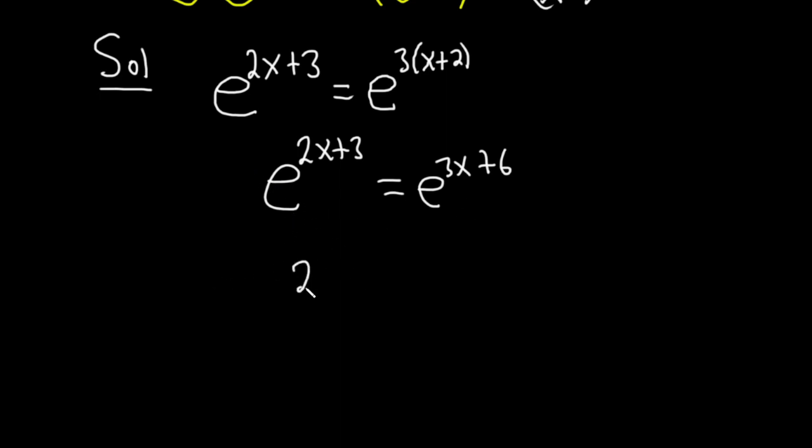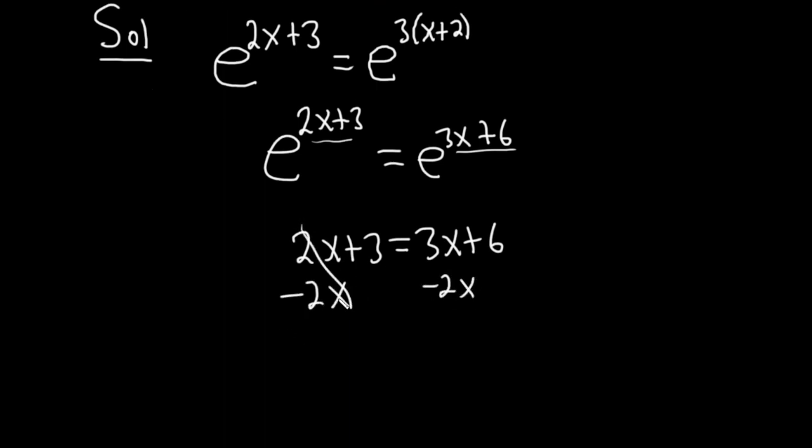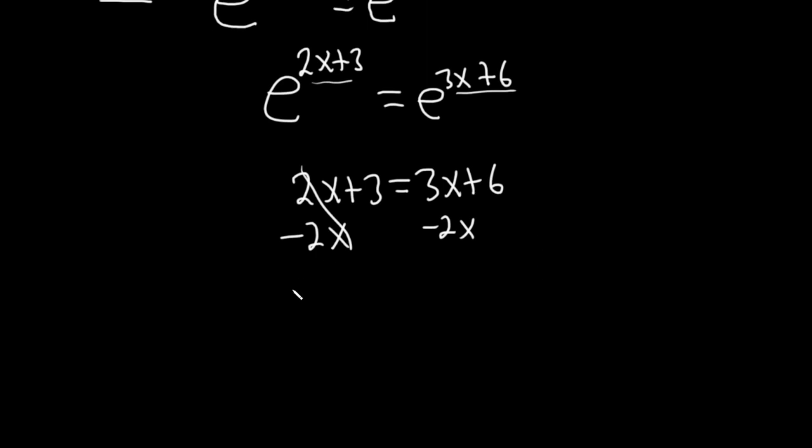So you just get 2x plus 3 equals 3x plus 6. Okay, you can take a natural log of both sides, you can realize they're both the same, so this quantity must be equal to this quantity. Subtract 2x, subtract 2x, so we get 3 equals x plus 6.